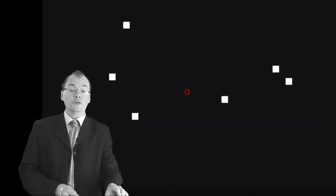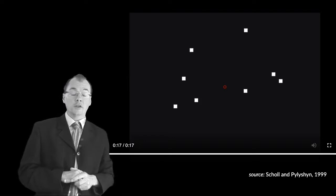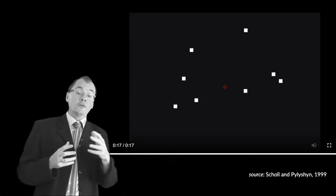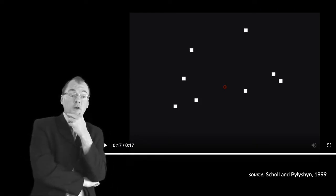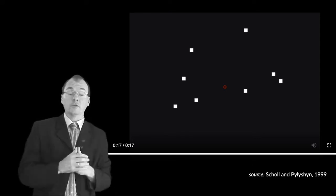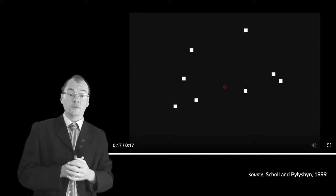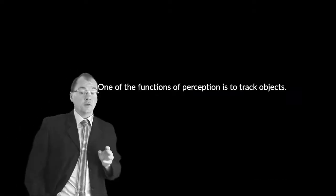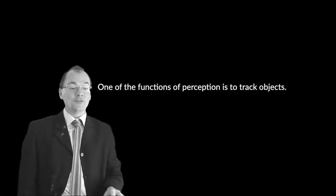Now, what Scholl and Pylyshyn found in their classic study based on earlier work, the replication of earlier findings in fact, was that humans generally are able to keep track of around about four simultaneously moving objects. Very interesting. Our perceptual systems enable us to keep track of moving objects. You might think, Steve, that's not very interesting, but it's the basis for something. Well, it is interesting actually, to me anyway, but it's the basis of something even more interesting.